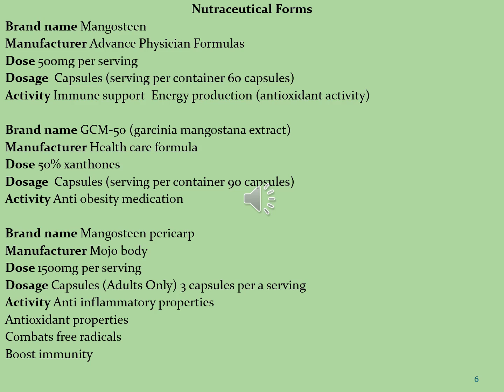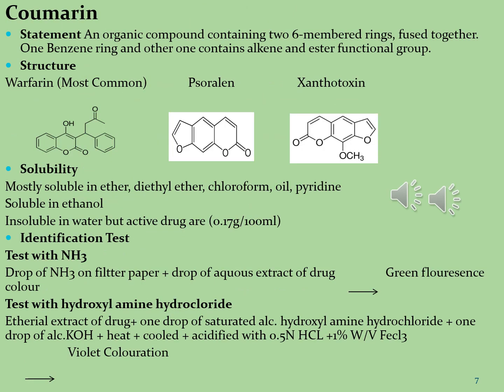The last brand is Mangostin Pericarp, manufactured by Mojo Body. The dose is 1500 mg to 1800 mg per day, formulated in capsule dosage form and taken as three capsules per day. It is used for anti-inflammatory properties, antioxidant properties, combats free radicals, and boosts immunity. Now let's see what coumarins are.